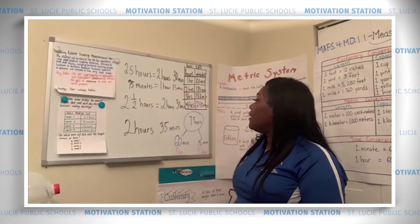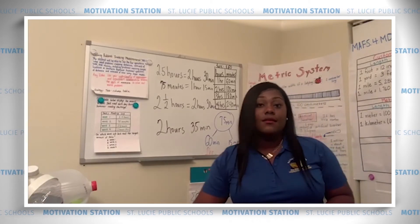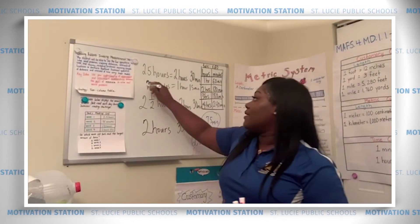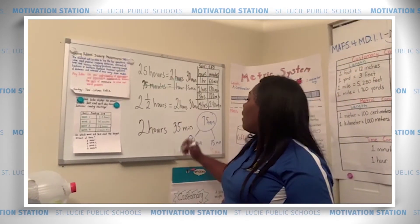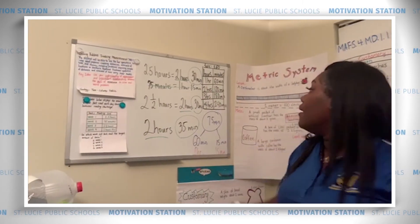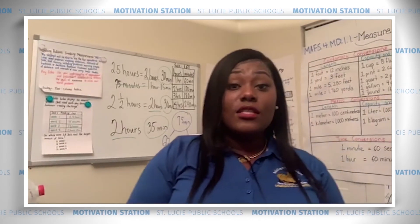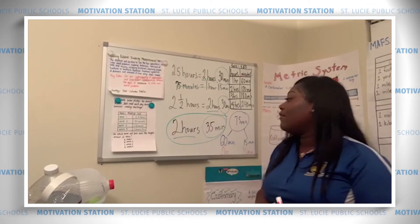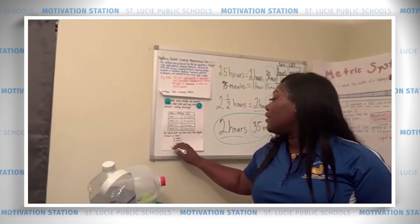So let's compare: two hours 30 minutes, one hour 15 minutes, two hours 30 minutes, two hours 35 minutes. Which time is longest? Definitely not the 75 minutes — that's only one hour 15 minutes. The other three all have two hours, so let's look at the minutes: 30, 30, and 35. Two hours 35 minutes is the longest. Jack read the longest during Week 4.